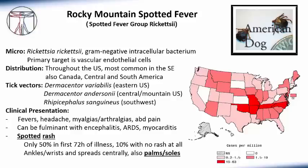Rocky Mountain Spotted Fever is transmitted by several different ticks. The most common in the eastern U.S. is Dermacentor variabilis, or the American dog tick. It can also be found in Dermacentor andersonii in the mountain and central regions, and in Rhipicephalus sanguineus in the southwestern United States.